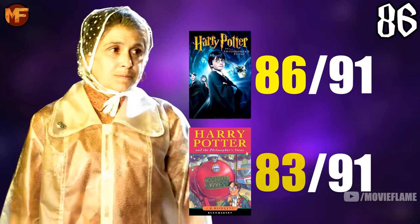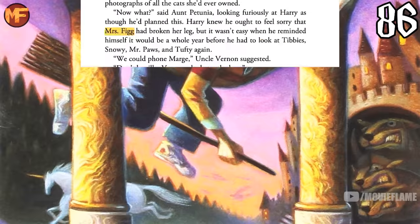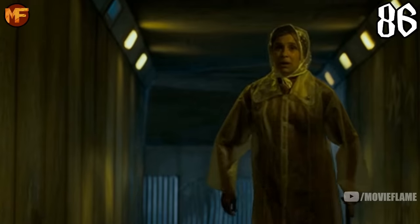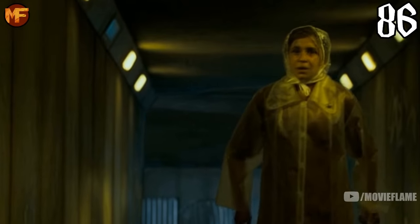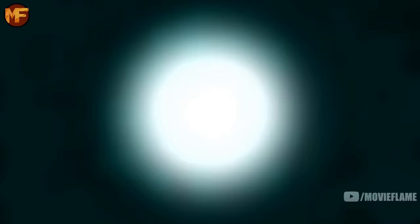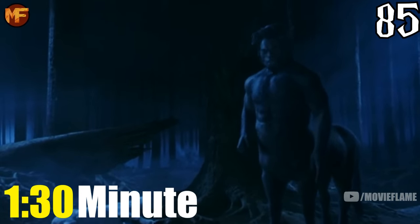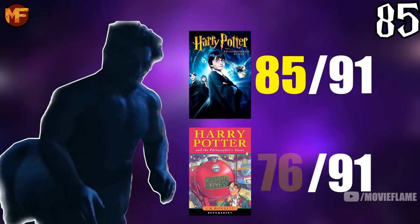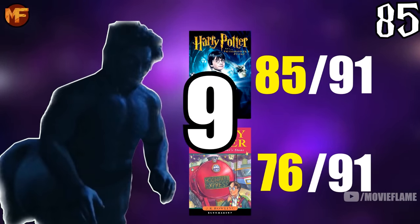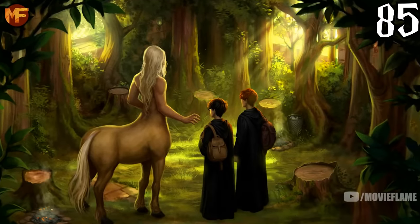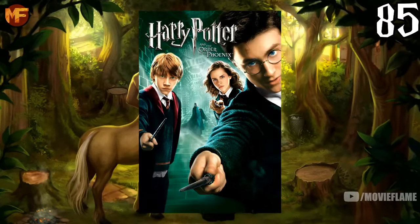Number 86 is Arabella Figg who also had one minute and 30 seconds of screen time, which fits as she ranked at number 83 for the novels, just three spots off. She was mentioned in the first book a few times, which wasn't in the films, so Order of the Phoenix was her only movie appearance. At number 85 we have Firenze with another one minute and 30 seconds, meanwhile ranked number 76 for the books — nine spots higher — because Firenze appeared in the fifth book as the new Divination teacher but did not appear in the fifth film.